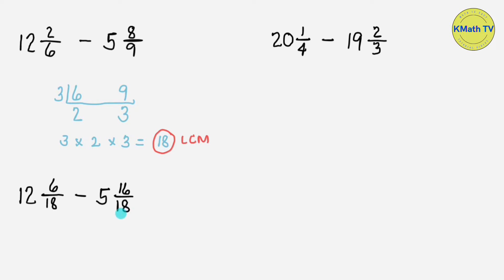Next is to subtract. Subtract the fractions first by subtracting the numerators. 6 minus 16 cannot be done because 16 is greater than 6. That means the fraction of the minuend is less than the fraction of the subtrahend, so we need to regroup before subtracting. The fraction of the minuend will borrow from the whole number. I'll show you the trick in regrouping.